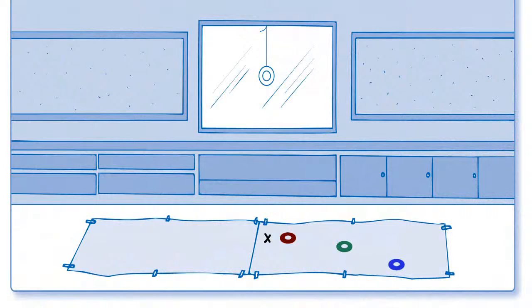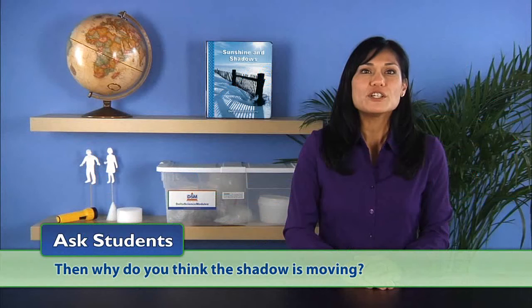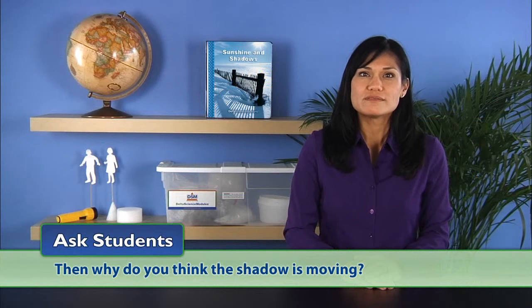Show them that the ring has not moved and ask, then why do you think the shadow is moving? Guide students to understand that the shadow is moving because the sun is moving.